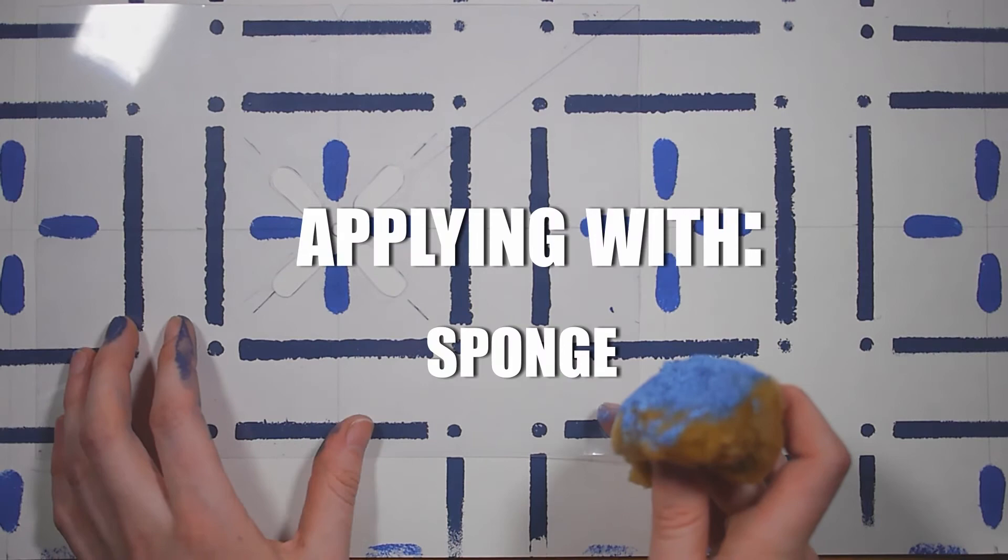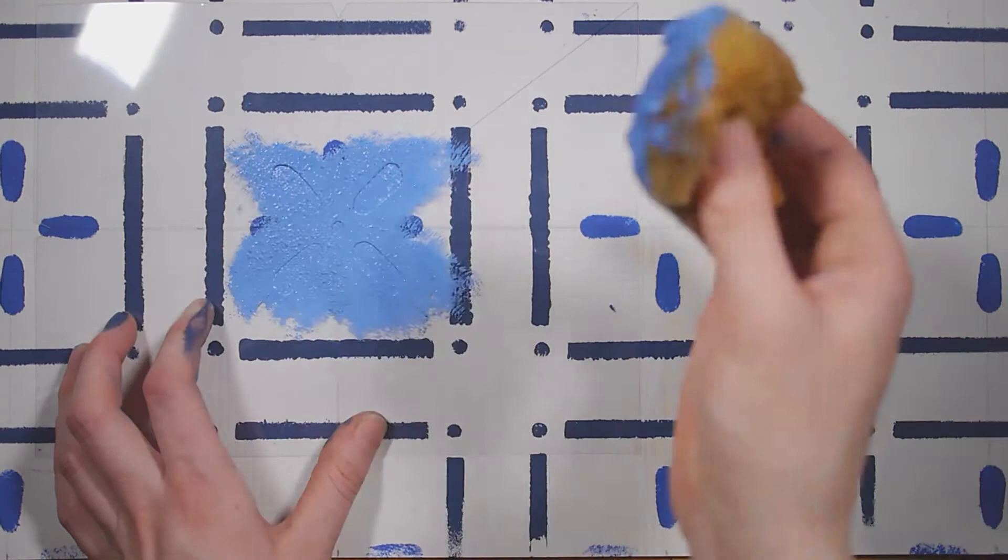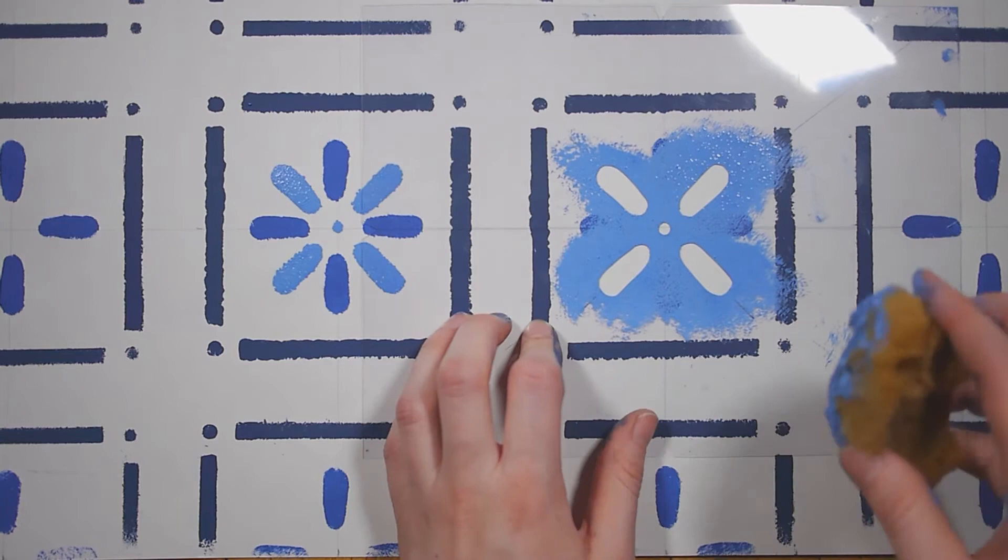Applying with a sponge is similar to a brush. You want to avoid any wiping motions so that the paint does not get under the stencil. Also be sure that you have wrung out any excess water from your sponge so that it does not water down your paint.